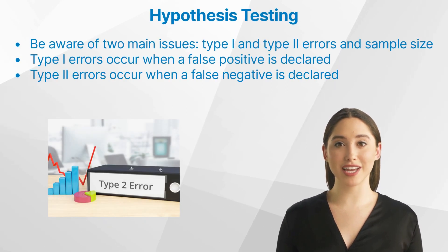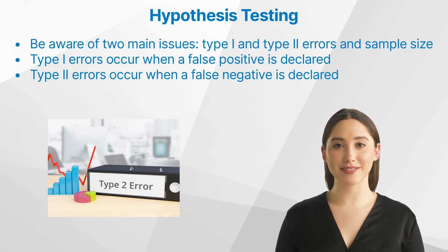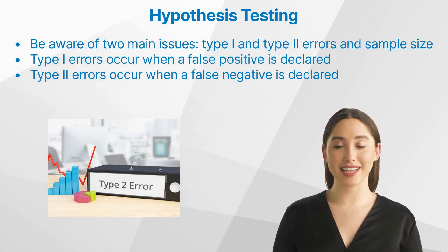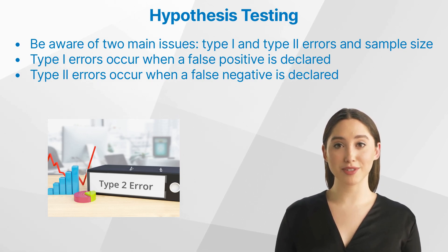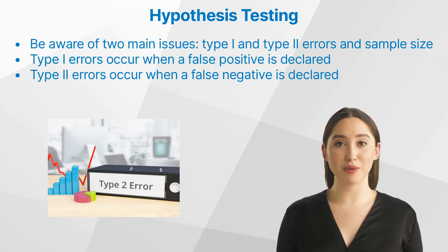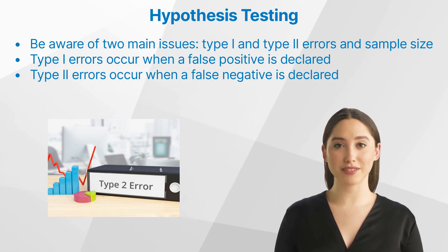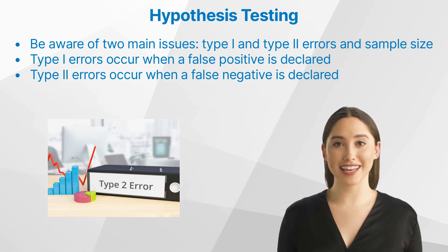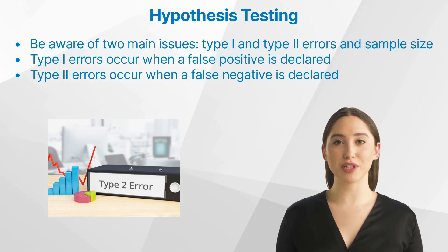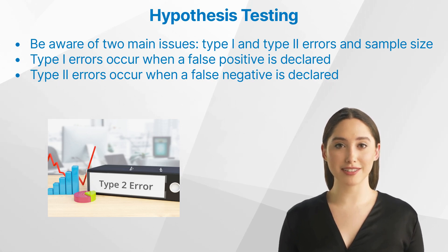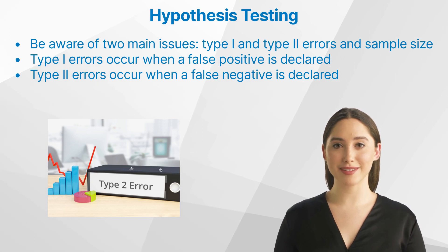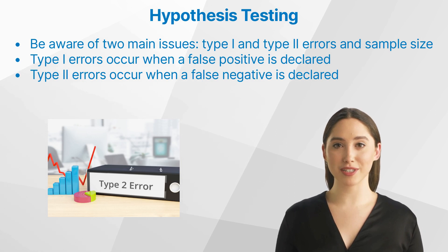When conducting hypothesis tests in clinical research, you should be aware of two main issues: type 1 and type 2 errors, and sample size. Type 1 errors occur when a false positive is declared, while type 2 errors occur when a false negative is declared. All statistical tests are designed to control the type 1 error. To optimize the type 2 error, a sample size calculation can be used. Additionally, hypothesis tests must take into account ethical considerations when using human subjects in clinical research studies.